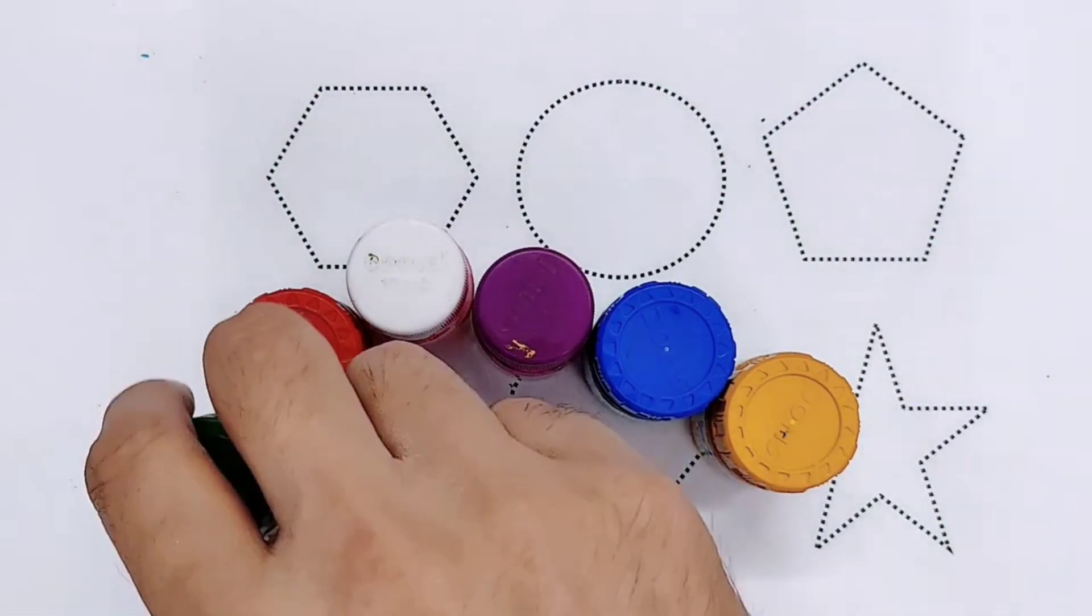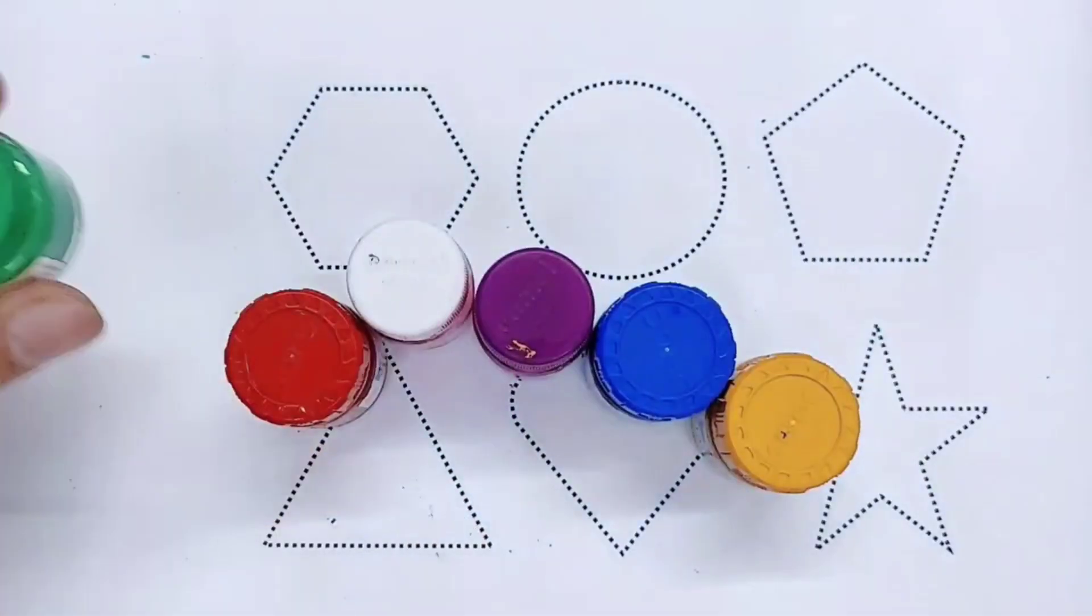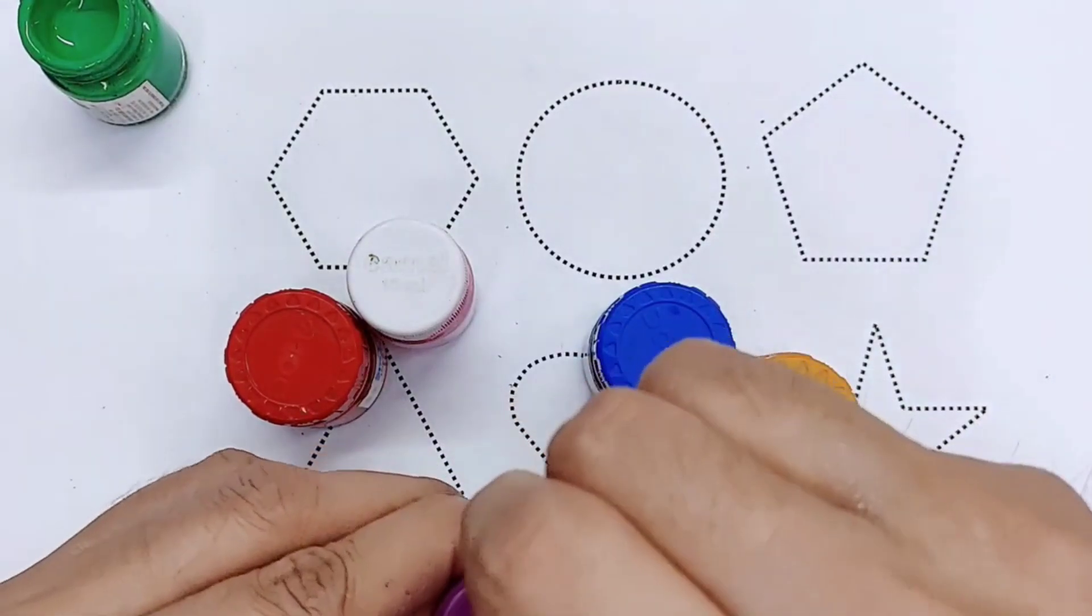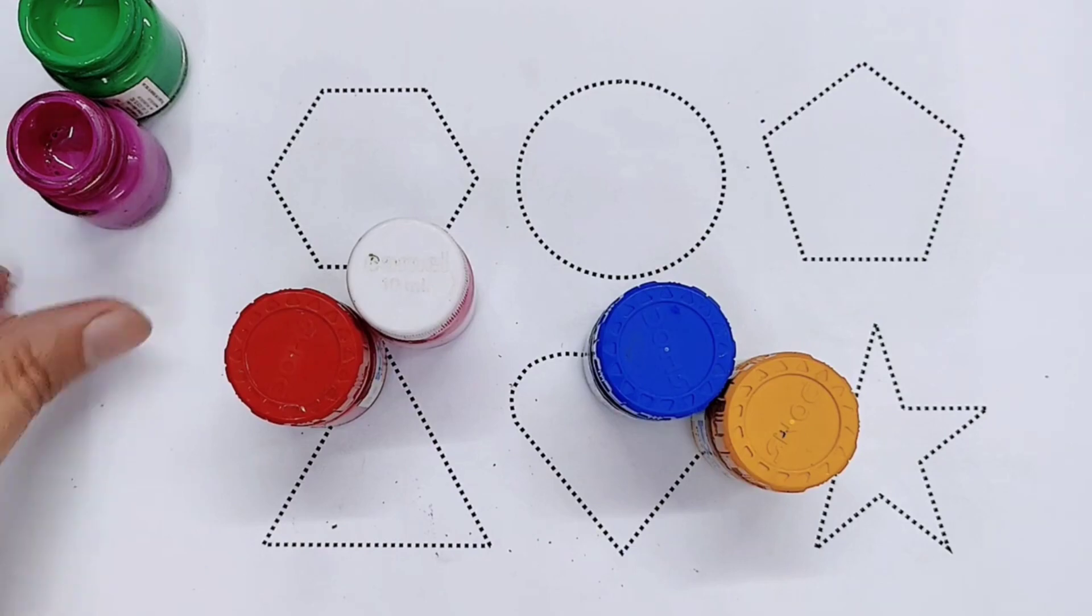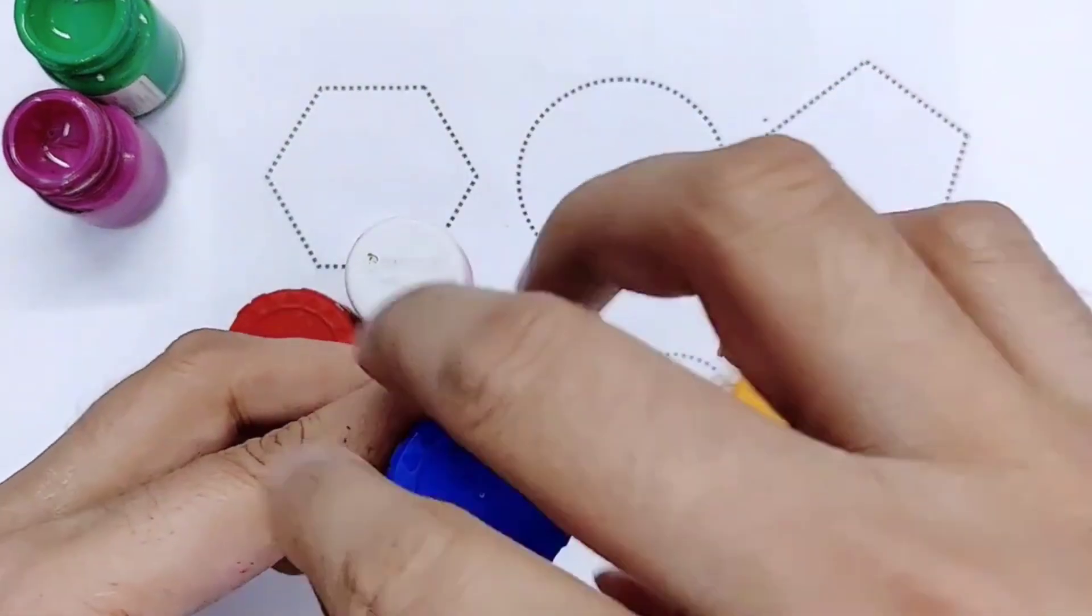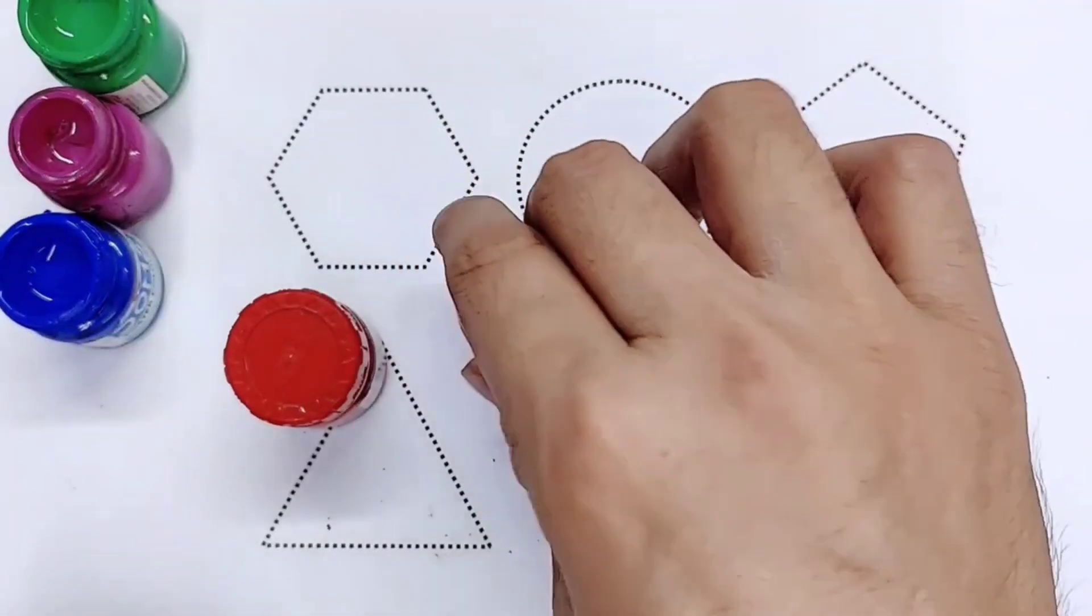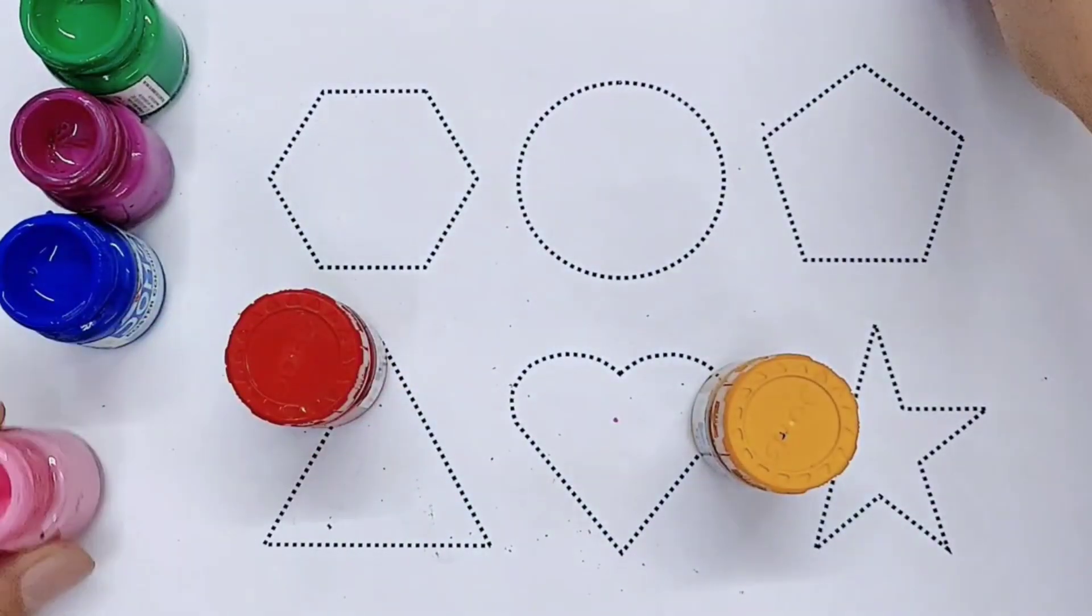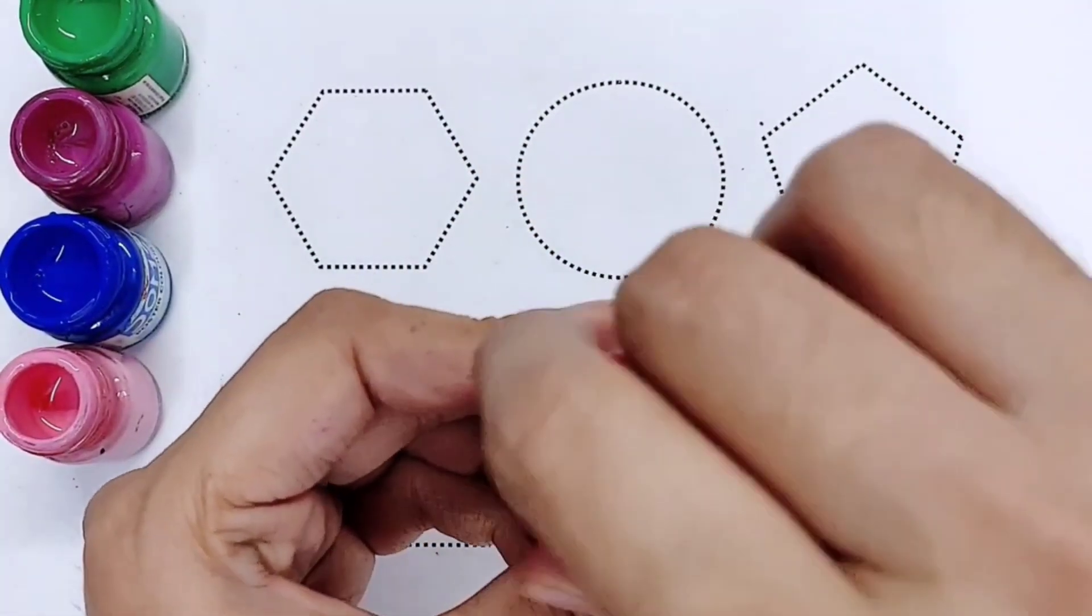Let's learn some color names. It's green color, green color. It's purple color, purple color. It's blue color, blue color. It's pink color, pink color.